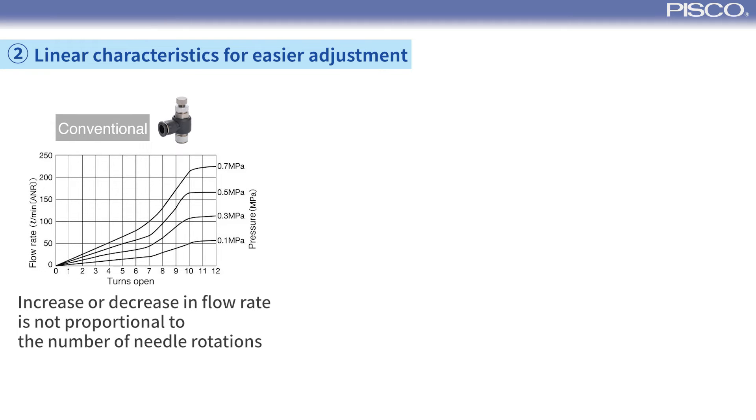With conventional products, the increase or decrease in flow rate is not proportional to the number of needle rotations. Specifically, the flow rate increases significantly after 7 rotations and the increase in flow rate becomes smaller after 10 revolutions.